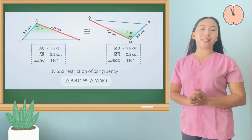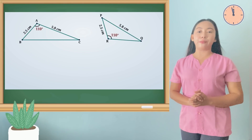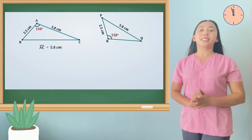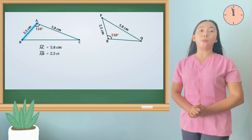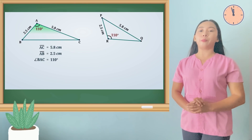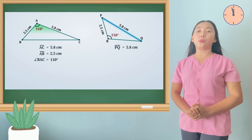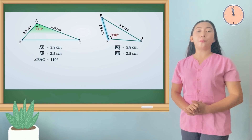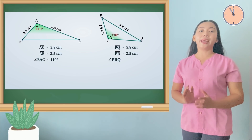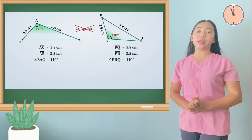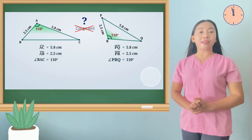Now, let us look at these two triangles. In triangle ABC, side AC equals 5.8 centimeters, side AB equals 2.5 centimeters, and angle BAC equals 110 degrees. In triangle PQR, side PQ equals 5.8 centimeters, side PR equals 2.5 centimeters, and angle PRQ equals 110 degrees. But these two triangles are not congruent. Can you tell the reason why?